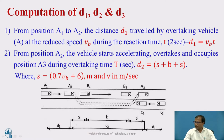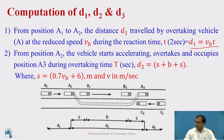D1 is the distance traveled by the overtaking vehicle at the reduced speed VB meters per second during the reaction time t. So D1 equals VB multiplied by t, where VB is in meters per second and t is the reaction time of the driver. From position A2, the vehicle starts accelerating and overtakes the slow-moving vehicle B, occupying position A3 during overtaking time T.